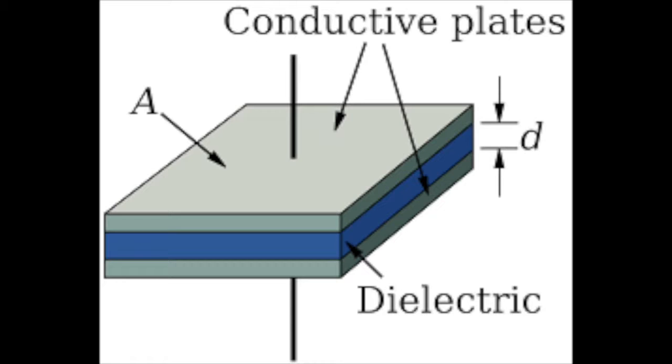The greater the distance between the two conductive plates, the smaller amount of electrical energy can be stored. The greater the surface area of the conductive plates, the greater amount of electrical energy can be stored.